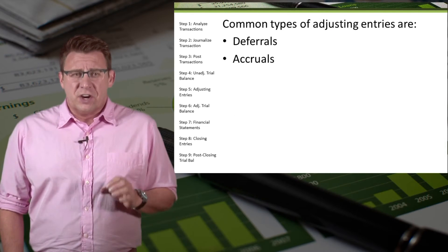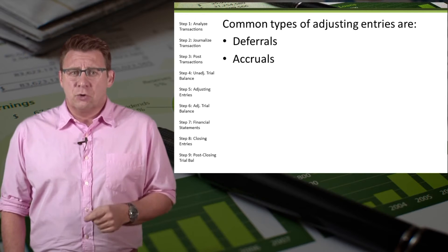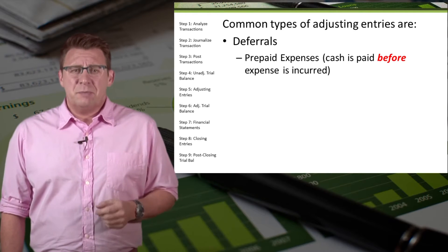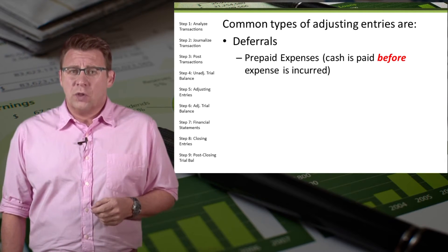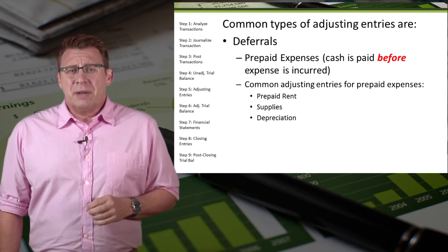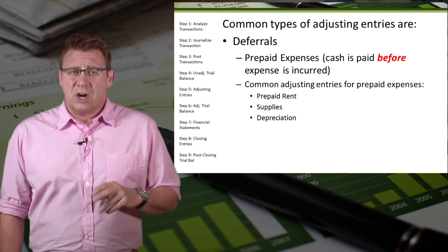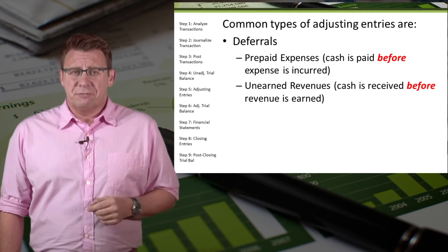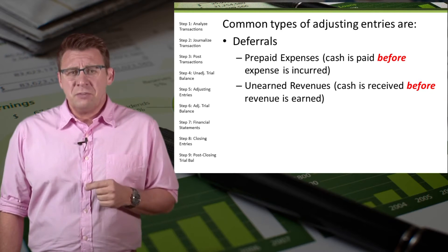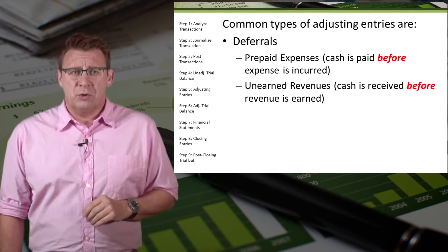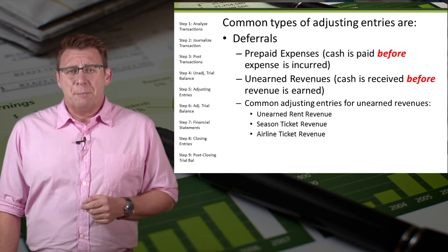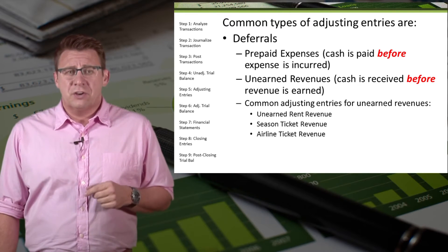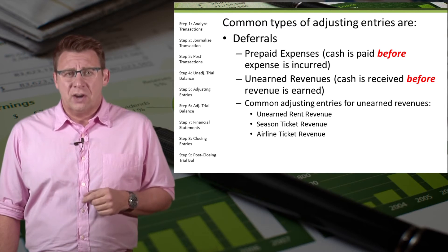When we make adjusting entries, there are two main types: deferrals and accruals. One type of deferral is prepaid expense, which means that cash is paid before the expense is incurred. Common examples of adjusting entries for prepaid expenses are prepaid rent, supplies, and depreciation. Another type of deferral is unearned revenue, meaning cash is received before the revenue is earned. Common examples include unearned rent revenue, unearned season ticket revenue, and unearned airline ticket revenue.